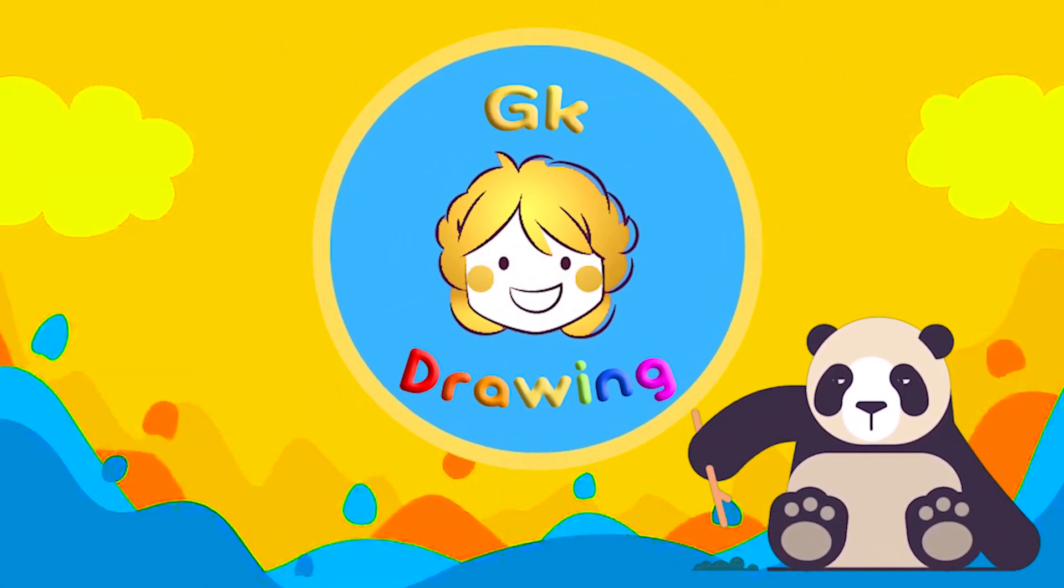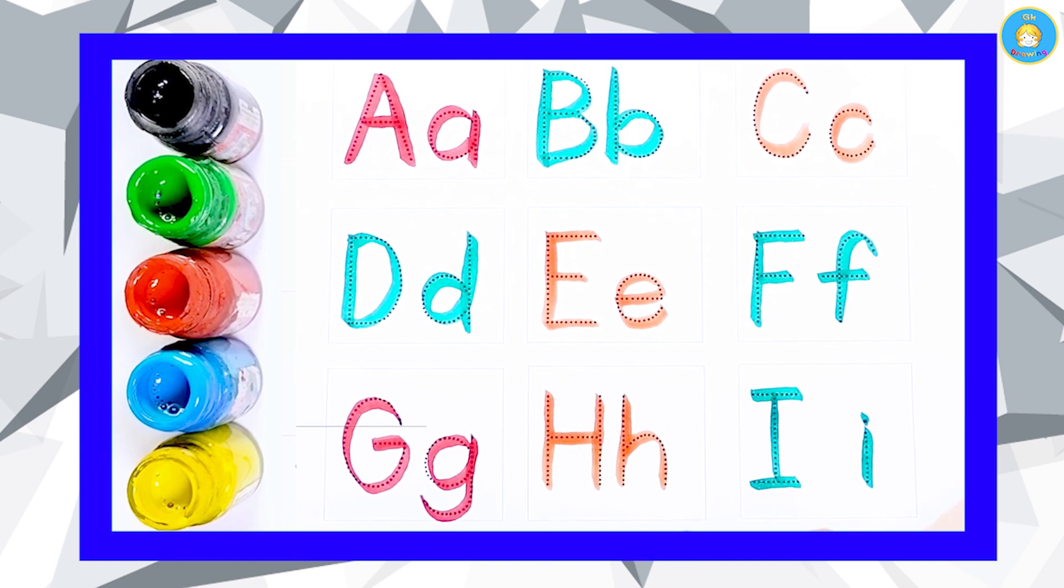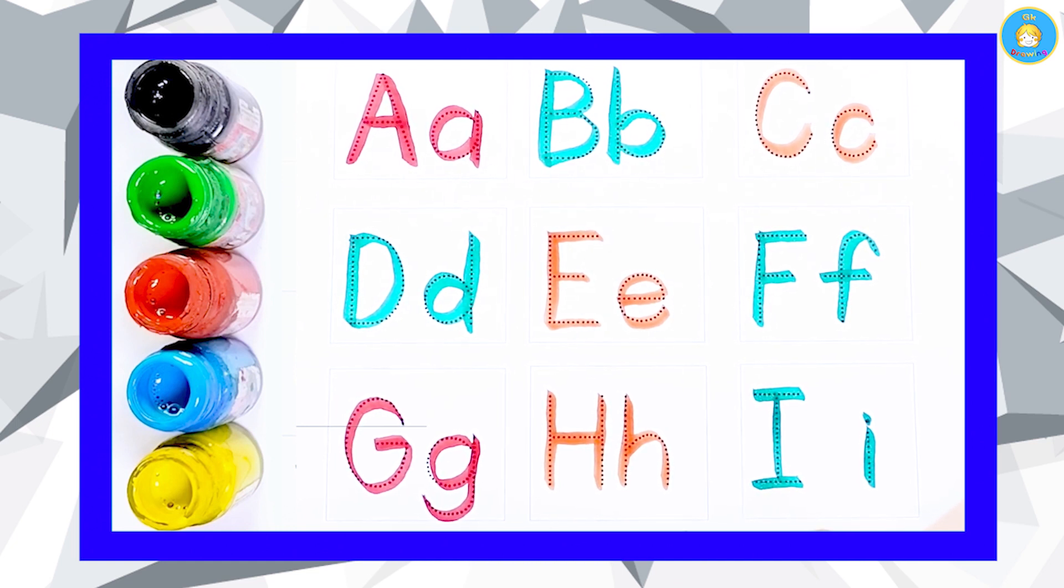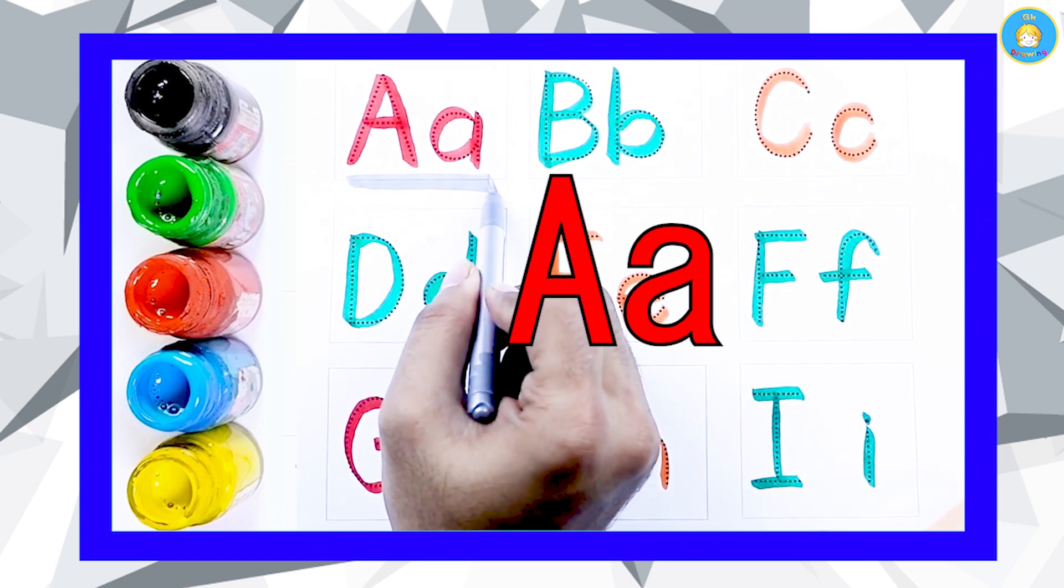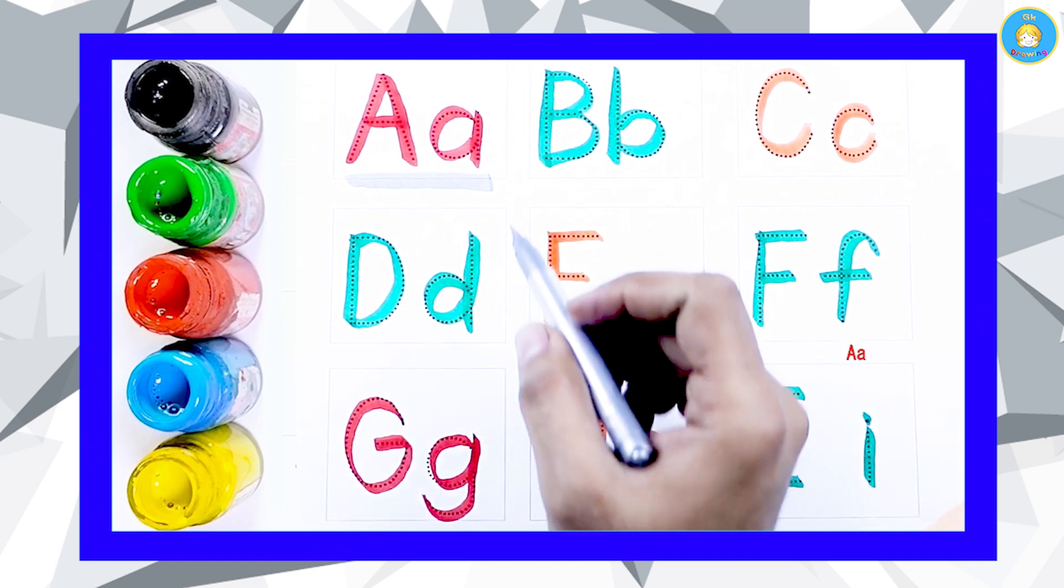Hello friends, today we learn capital alphabets and small alphabets with some colors. It's a red color A, A for Apple. Green color B, B for Ball.